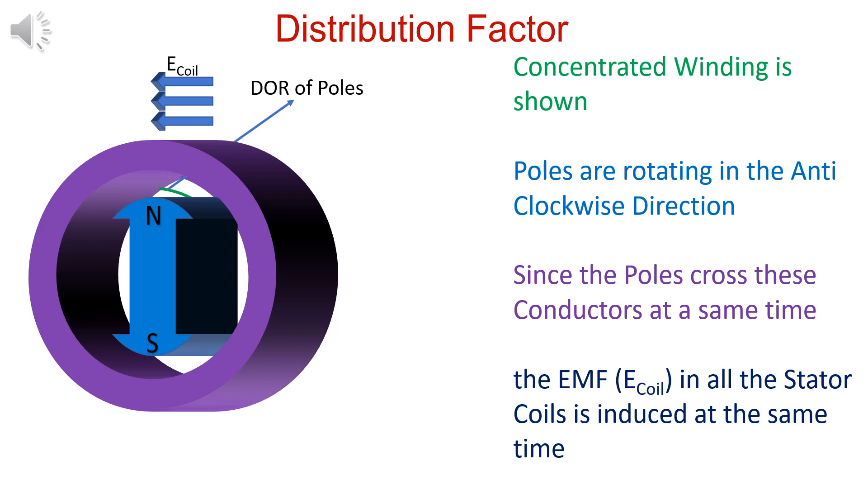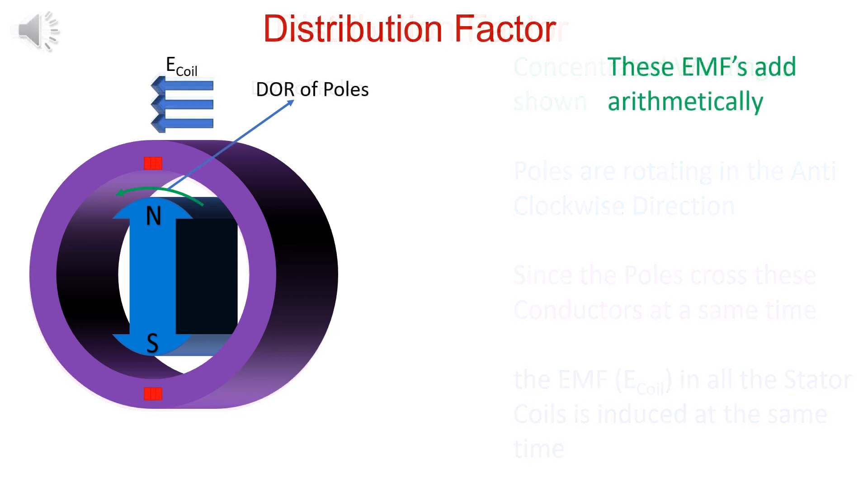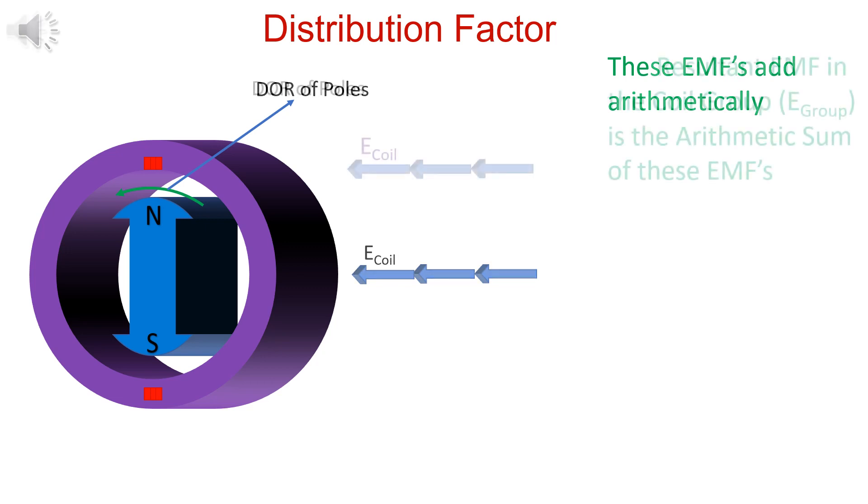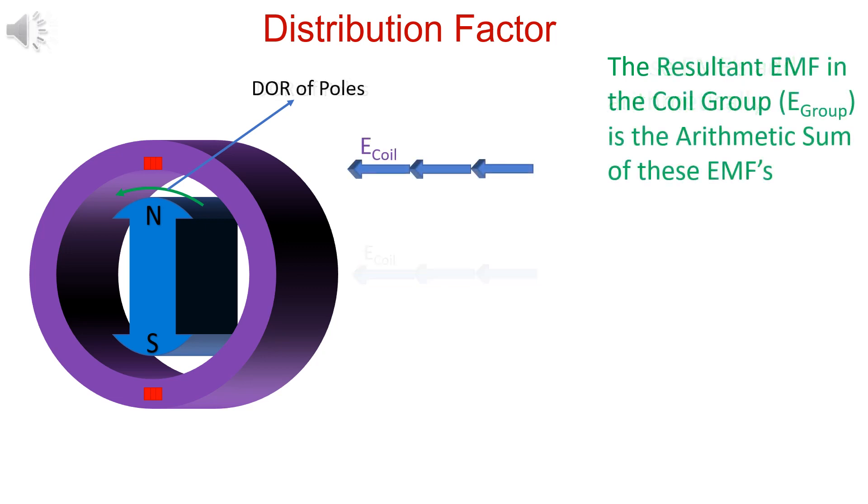In a concentrated winding, EMF induced in a coil of a group are in phase. Arithmetic addition is done to obtain the resultant EMF. Resultant EMF is the arithmetic sum of these EMFs.